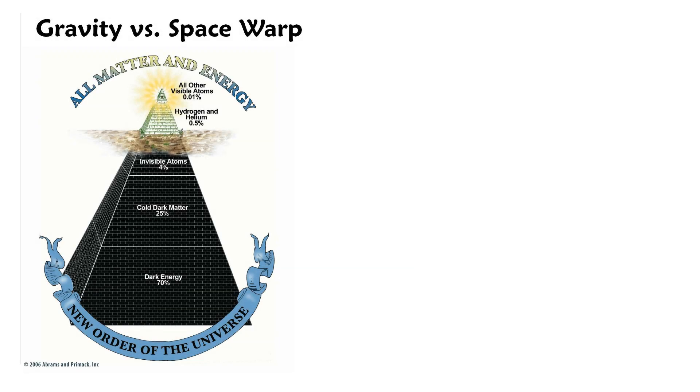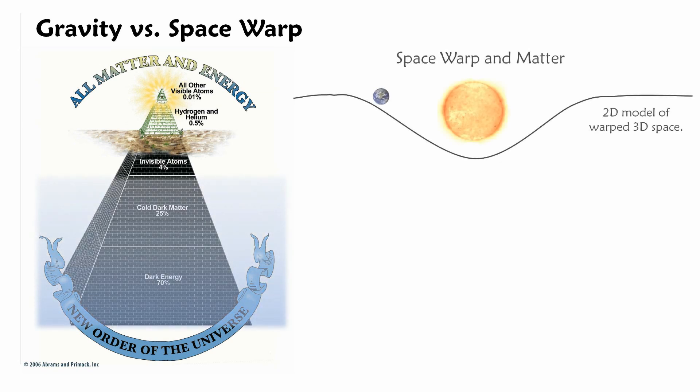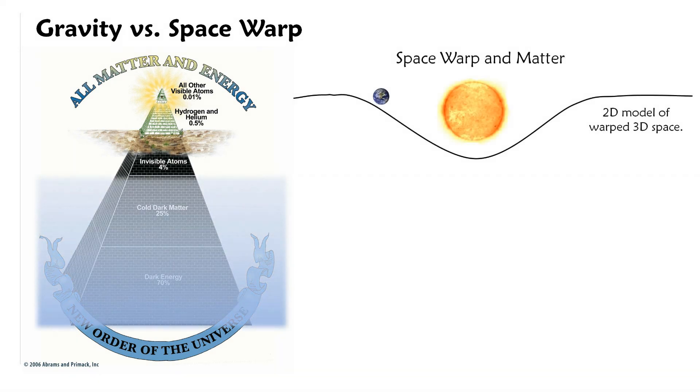Next to the top part of the cosmic density pyramid, which represents matter, you see a 2D model of 3D bent space. Our Sun is in the middle of our solar system and it creates the most gravity, which equals the most space warp.